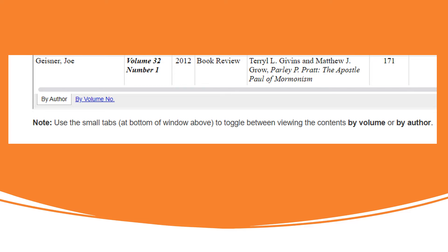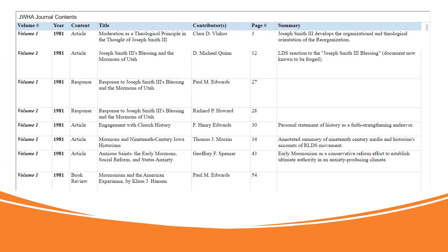At the bottom of the page, you will find the option to view the index by author or by volume number. This screen shows the index organized by volume number. The by-author or by-volume-number option is a toggle switch, allowing you to easily move to either view.